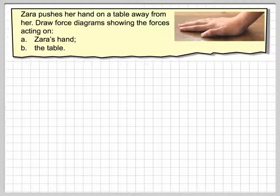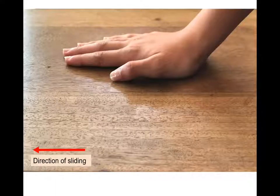Okay, in this video we're going to look at what happens when you push your hand on the table and start trying to push it away while pushing downwards at the same time. Zara pushes her hand on the table away from her. Draw a force diagram to show the forces acting on Zara's hand and the table. So jumping to this PowerPoint, this is the direction of the sliding.